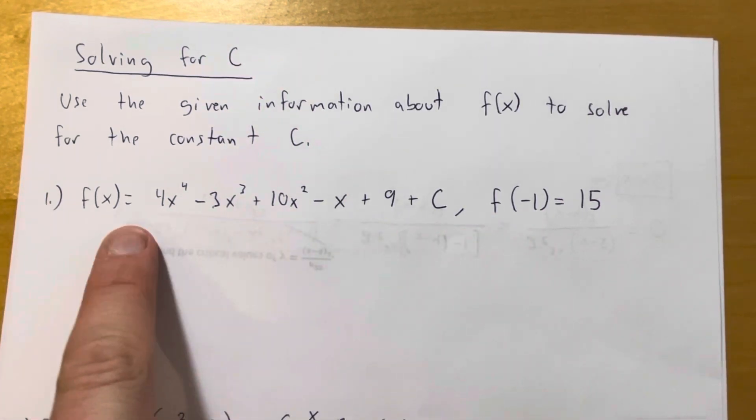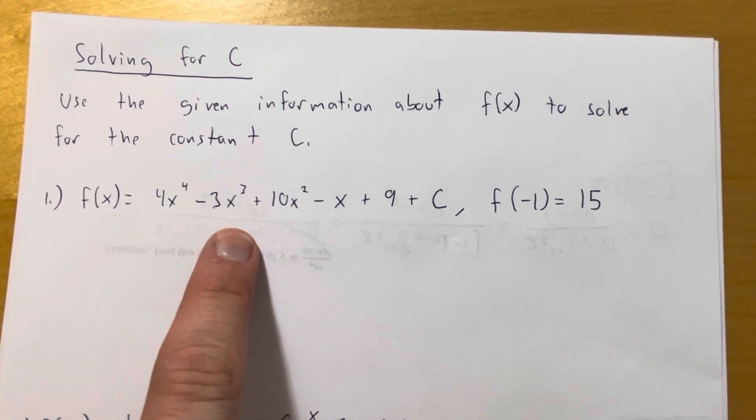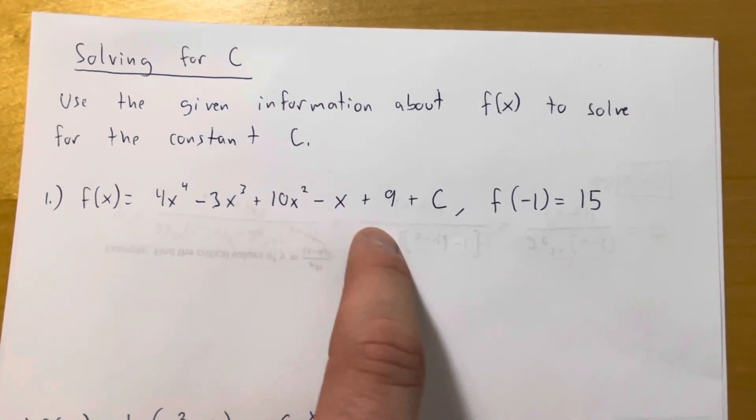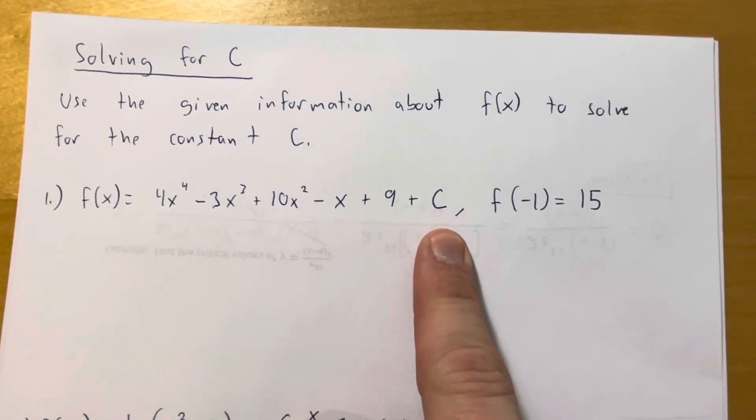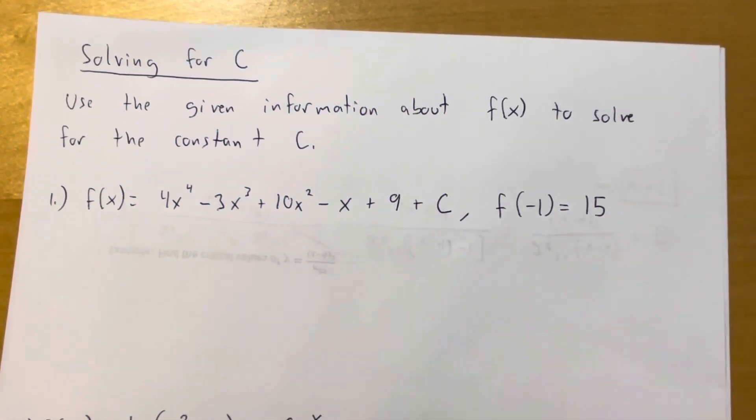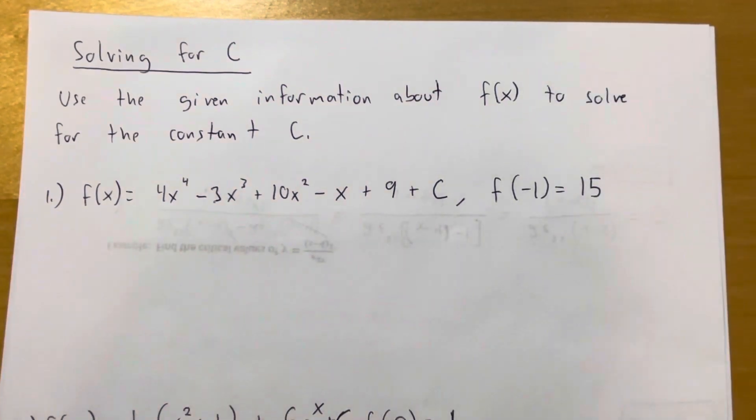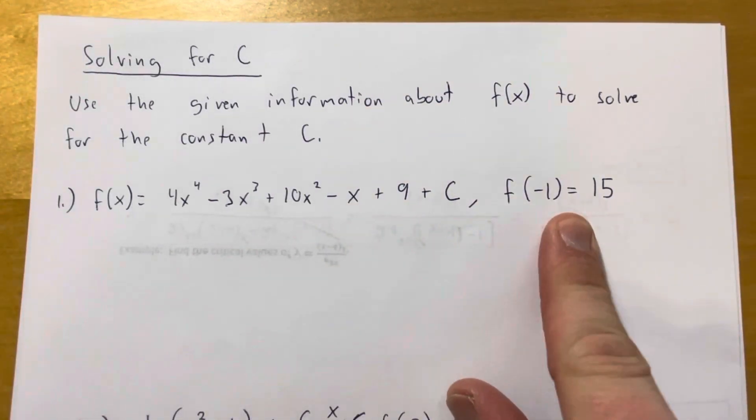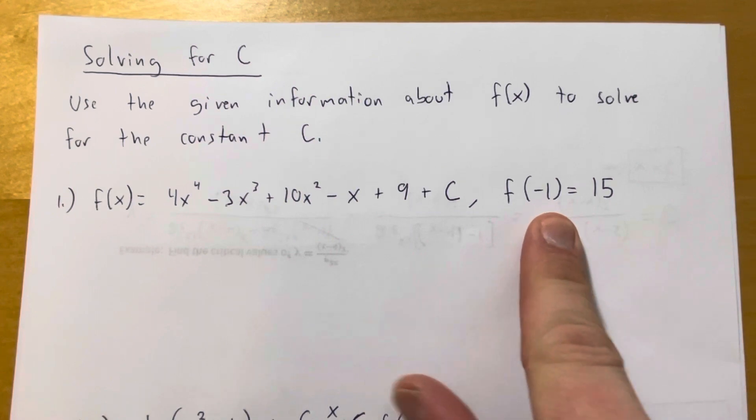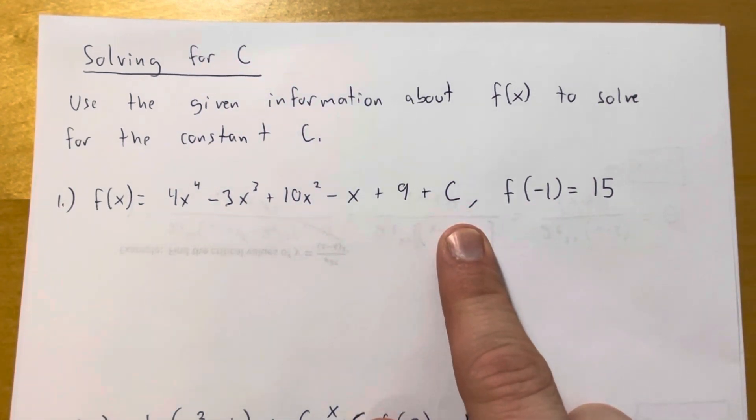So if you notice here, we have f of x equals 4x to the fourth minus 3x cubed plus 10x squared minus x plus 9 plus C. And then we also know that f of negative 1 is equal to 15. So this is oftentimes called an initial condition, and it can be used to find this unknown constant right here. And here's how it works.